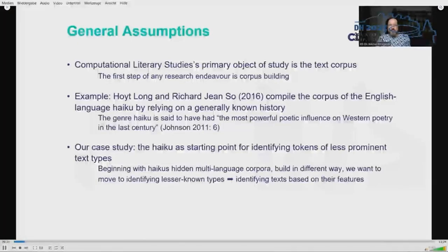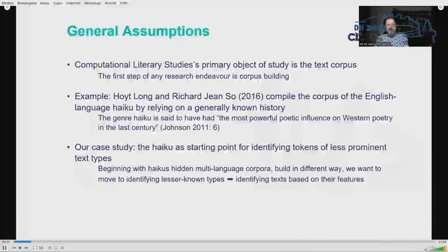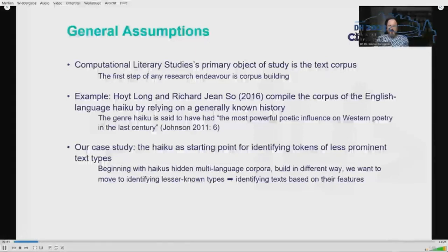Any research begins with building a corpus of texts to work with. When Hoyt Long and Risha Johnson, in their well-received article on literary pattern recognition, described how they constructed their corpus, they relied on a very well-defined and thoroughly described history of the reception of the haiku in Anglo-Saxon poetry. Johnson called the haiku one of the most powerful poetic influences on Western poetry in the last century.